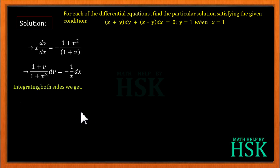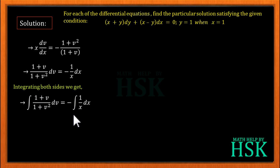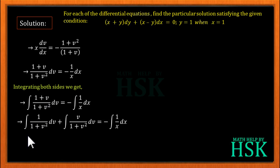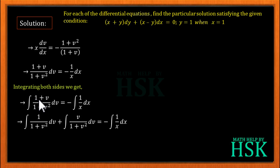Integrating both sides: ∫(1 + v)/(1 + v²) dv = -∫(1/x) dx. The left hand side can be split as ∫1/(1 + v²) dv + ∫v/(1 + v²) dv. I have divided the numerator terms — 1 with (1 + v²) and v with (1 + v²) — giving these two separate integrals.